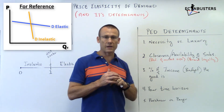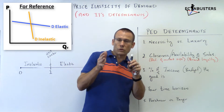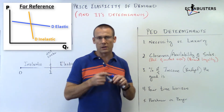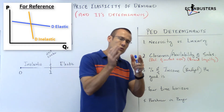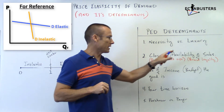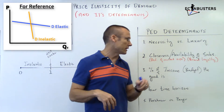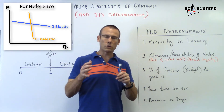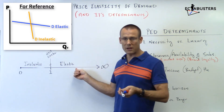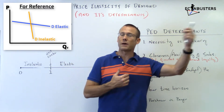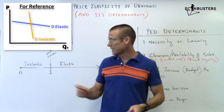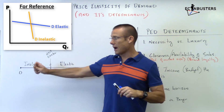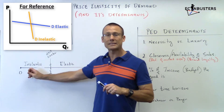Second determinant: closeness and availability of substitutes. Is a Whopper truly a close substitute for a Big Mac? Is the Nike running shoe a close substitute for the New Balance running shoe? And how available are they — do you have to drive across town, or is it right across the street? The more close and available the substitutes, the more elastic. You raise the price, I'll just go buy the other one. If substitutes are not close or available, you raise the price and I probably have to buy the good anyway — inelastic.